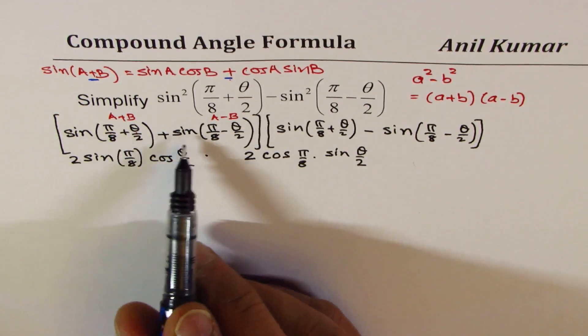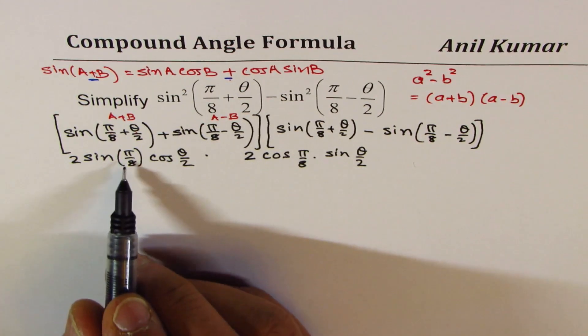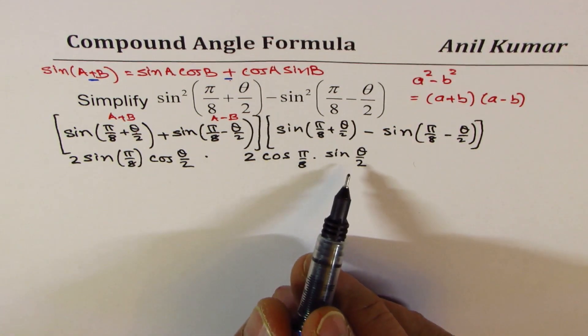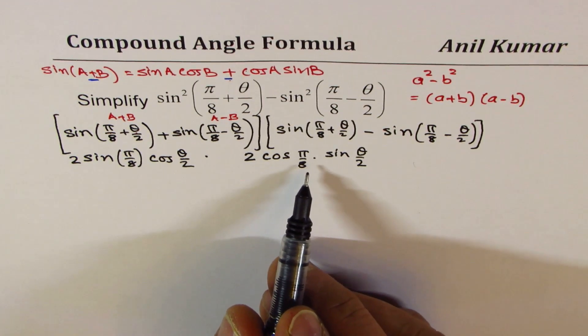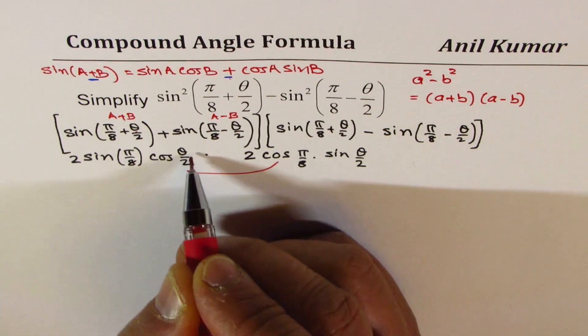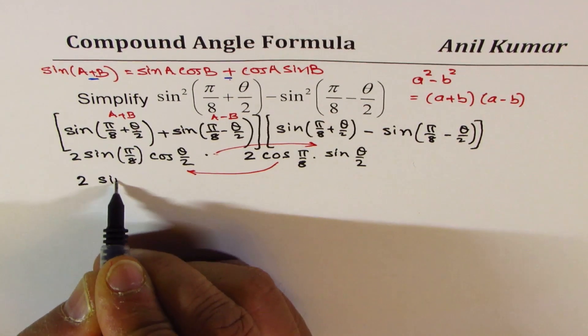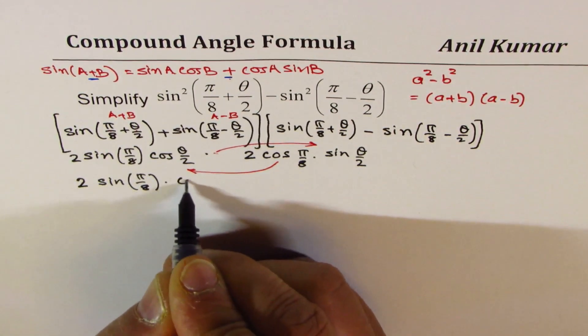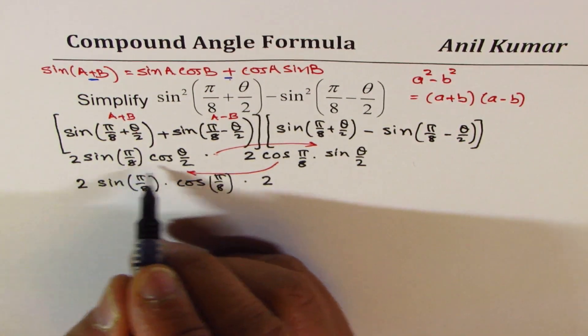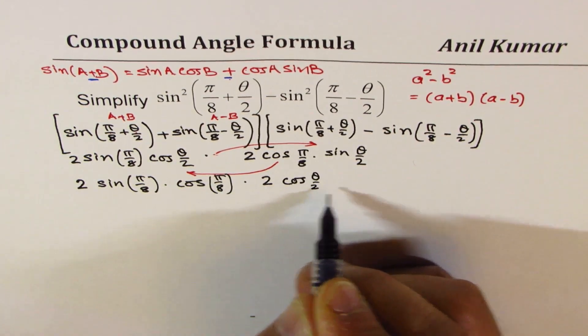So now we have again translated these sums and differences to product. Now we'll rearrange these. So if I rearrange it, I could write this as 2sin(π/8) times cos(π/8), times 2cos(θ/2), I mean θ/2, sin(θ/2).